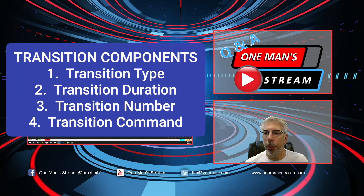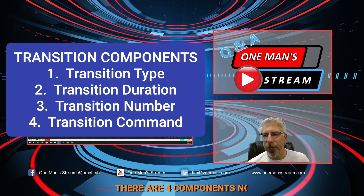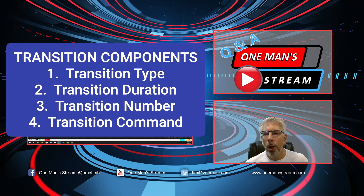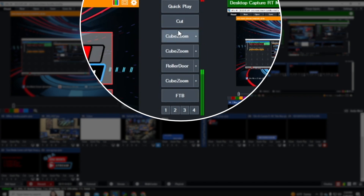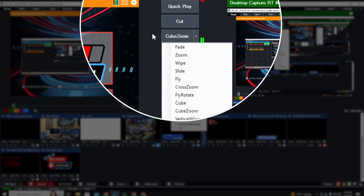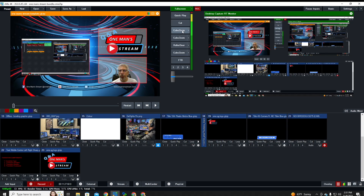There are three components to a transition. The first is the transition type — cut, fade, merge, cube zoom, roller door, fly rotate, vertical wipe, vertical slide, wipe reverse, slide reverse, and many others available in vMix. You'll notice quick play and cut are static, and then there are four transitions (1, 2, 3, 4) that you can change via the drop-down. When doing transitions, we designate a transition number 1 through 4. The second component is the transition duration. The third is bringing out the transition command in vMix UTC so everything is processed and the transitions will work.